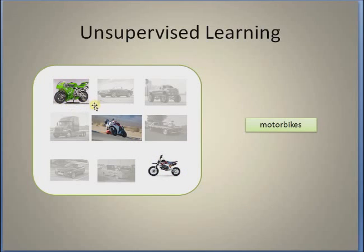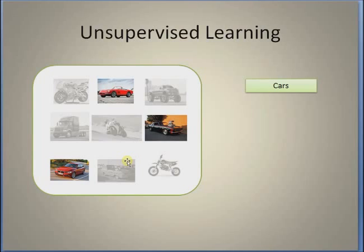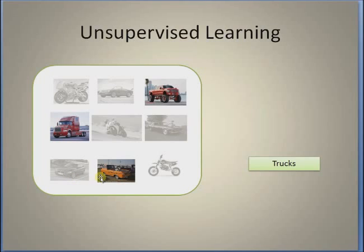For example, all bikes have two tires and a front handle. Similarly, cars all have four wheels and usually four seats. And the common theme for all trucks is they usually have only front seats and no back seats. The problem of unsupervised learning is basically to cluster samples with similar features using some kind of similarity measure into respective groups or categories.